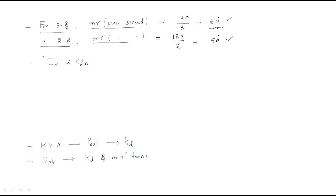Due to the nth harmonic, the induced EMF value is proportional to kdn, the nth harmonic distribution factor. If we want to remove this nth harmonic distribution factor, the nth harmonic EMF will also be removed. We always try to maintain sinusoidal voltage, so we should remove the harmonic content of the EMF. In order to remove it, we set kdn equal to zero — then automatically the EMF due to the nth harmonic becomes zero.